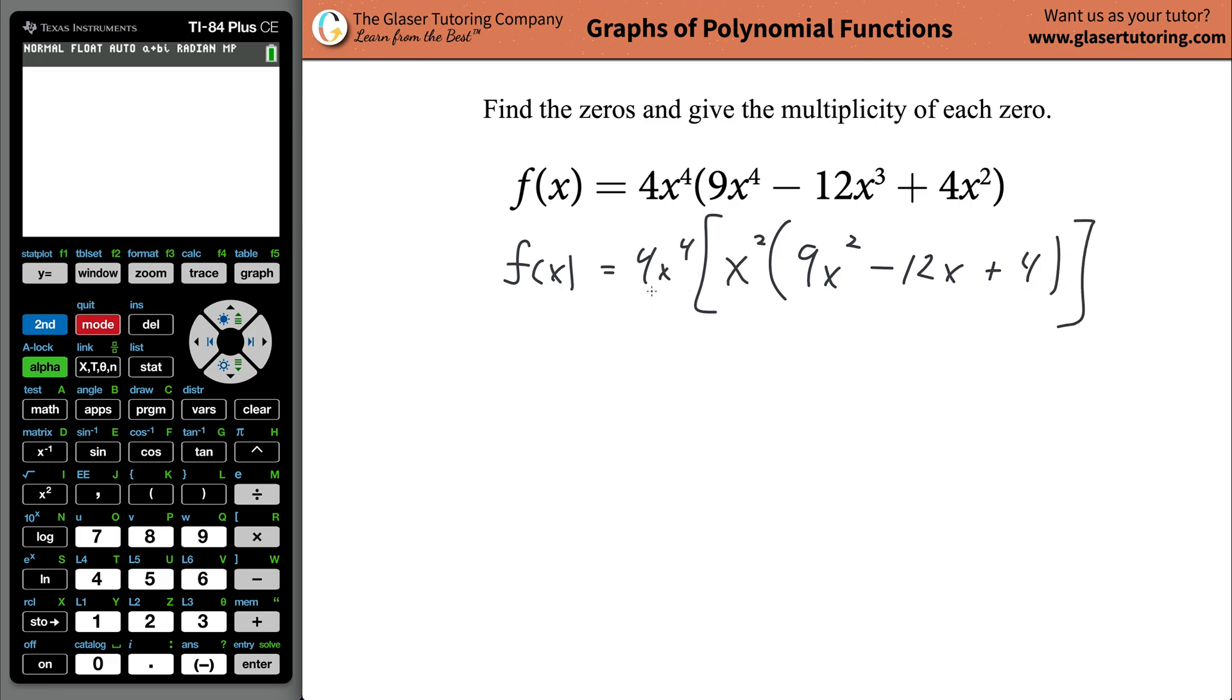Now, what I realize is that basically, these two terms are multiplied together: the 4x raised to the fourth and the x-squared. So, wait a minute. Can I combine them? Sure you can. This would be 4x to the sixth. Parenthesis now, 9x-squared minus 12x plus 4.